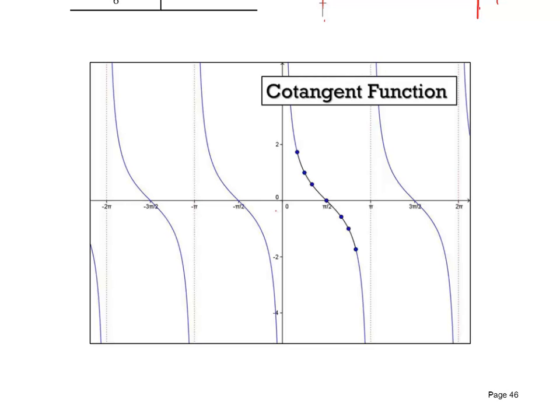Notice how the asymptotes will occur at 0, π, 2π, negative π, negative 2π, and so on. The x-intercepts are going to be at the middle of each of those intervals, and it's going to go always downhill for cotangent. Tangents are always going uphill. Cotangents are going downhill, but the same basic shape.